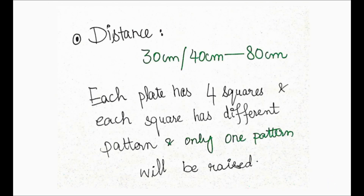Every test is performed at a specific distance — for example, retinoscopy is performed at 67 cm and direct ophthalmoscopy at 15 cm. The Frisbee test can be performed at varying distances, ranging from 30 cm or 40 cm up to 80 cm.